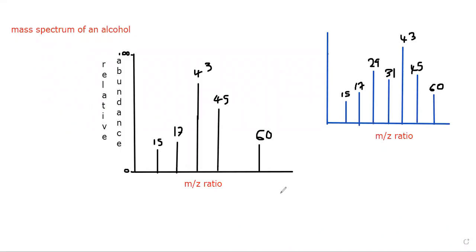We have two mass spectra, both of them for an alcohol — the same molecular formula. If we compare both of them, the fragments 15 and 17 appear in both. But one does not have 29 while the other does. One has 31 but the other does not. When you have missing peaks like this with the same molecular ion, it means they are isomers.